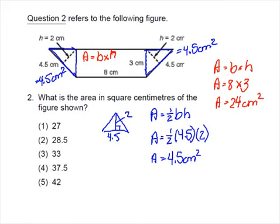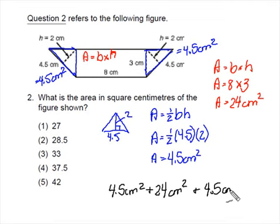So the total area of the shape can be found by adding the area of the first triangle with the area of the rectangle and then the area of the last triangle. And I'm getting a total area of 33 centimeters squared.